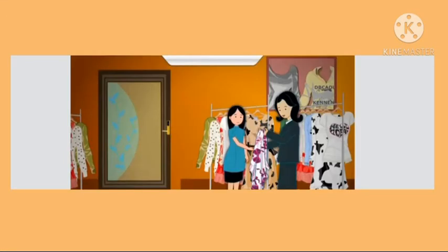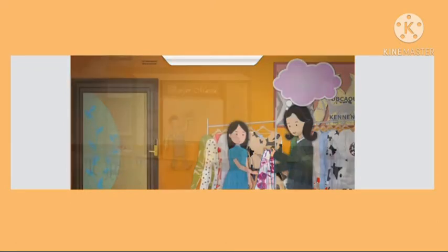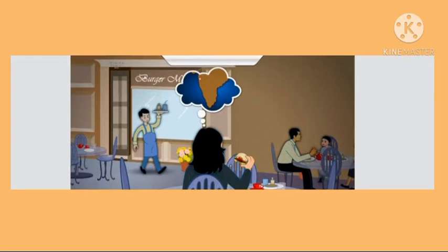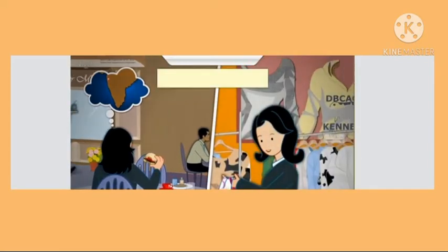When her work was done, Roma went shopping at the city mall. She found many products sold there were also available in India. Roma also ate a burger at a Burger Mania outlet and was surprised that the taste was exactly the same as the Burger Mania outlet back in India — demonstrating how globalization standardizes products across countries.